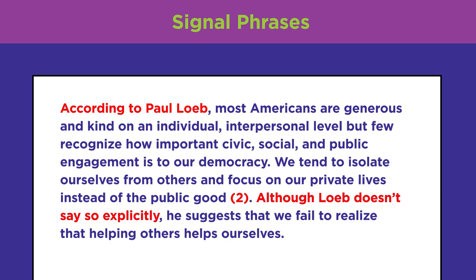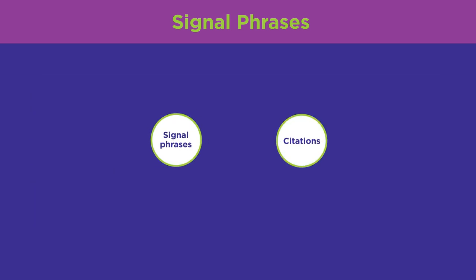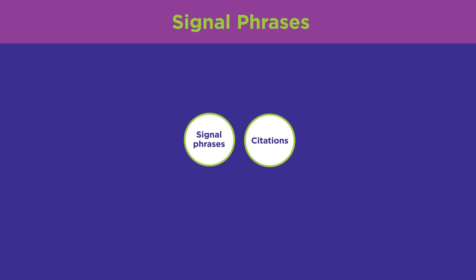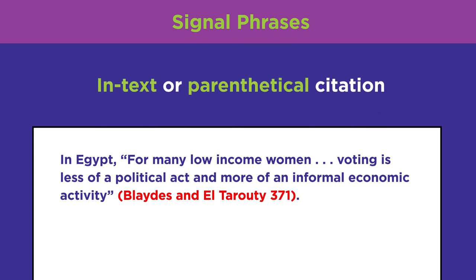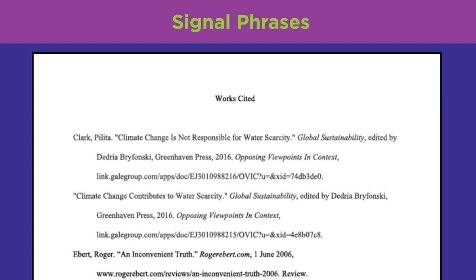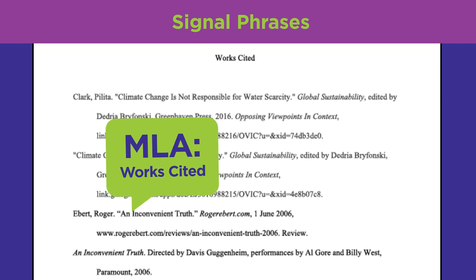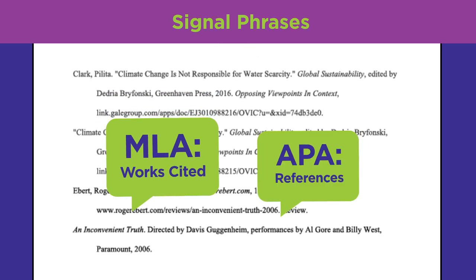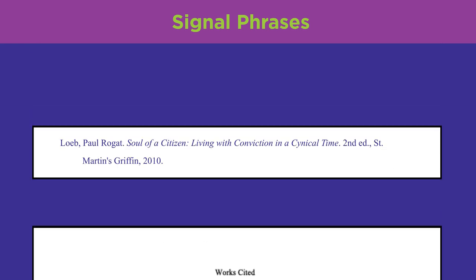The concepts of signal phrases and citations are closely related. When doing research, you mention sources within the paper to show where ideas come from — this is sometimes called in-text or parenthetical citation. You also list a full citation for all sources together in the bibliography at the end. In MLA style a bibliography is called a Works Cited list; APA calls it a Reference list. Here's what a full citation in MLA format would look like for Loeb's book.